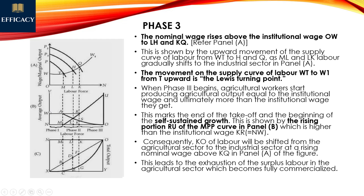The movement from WT to TW1 is called the Lewis Turning Point, a very important observation. That is why the Fei-Ranis model is called an extension of the Lewis dual sector model.